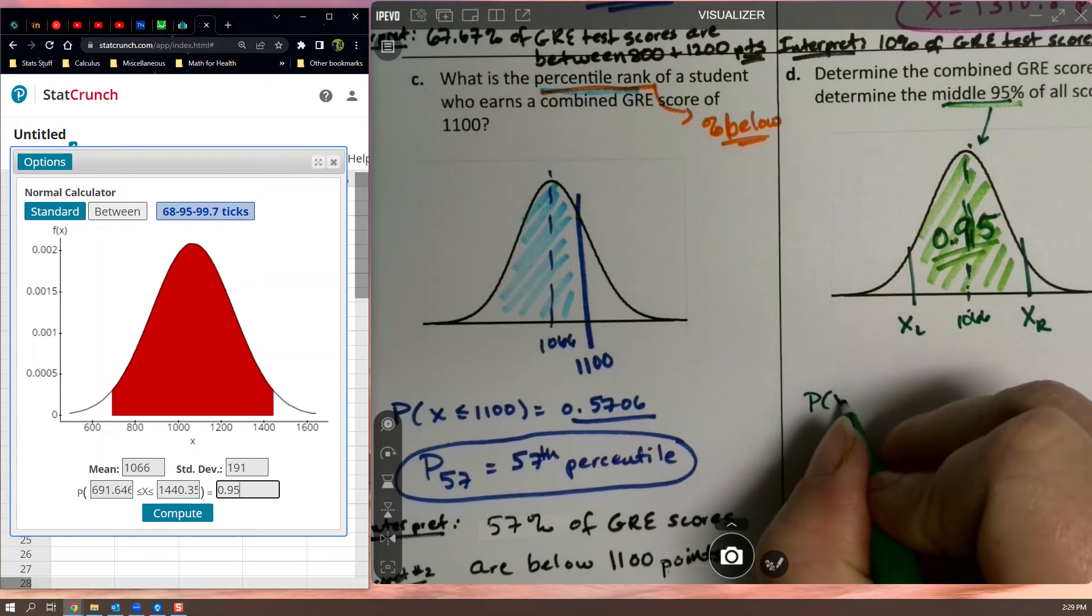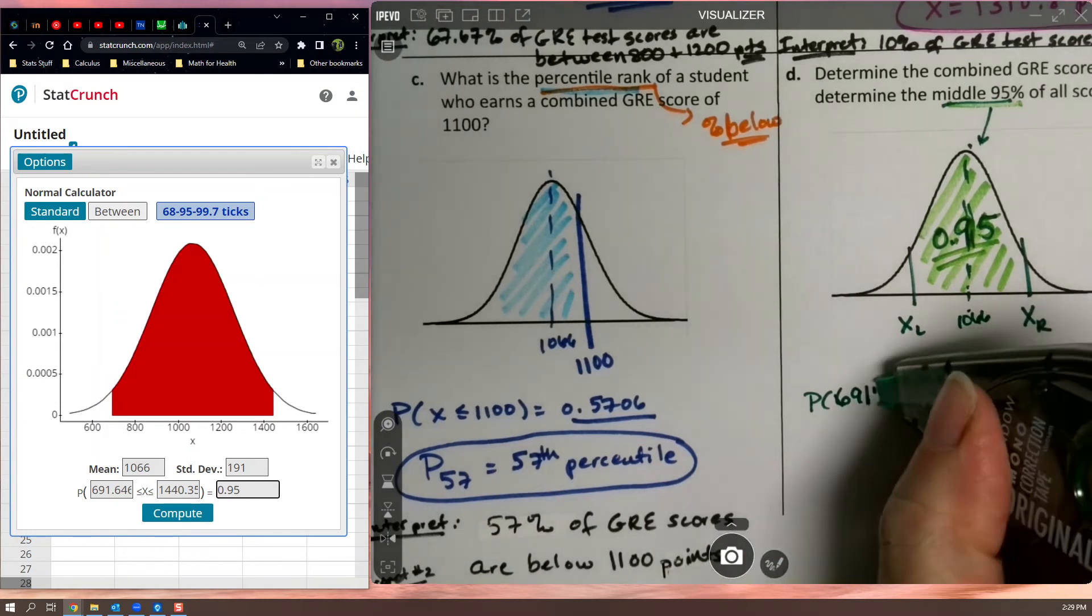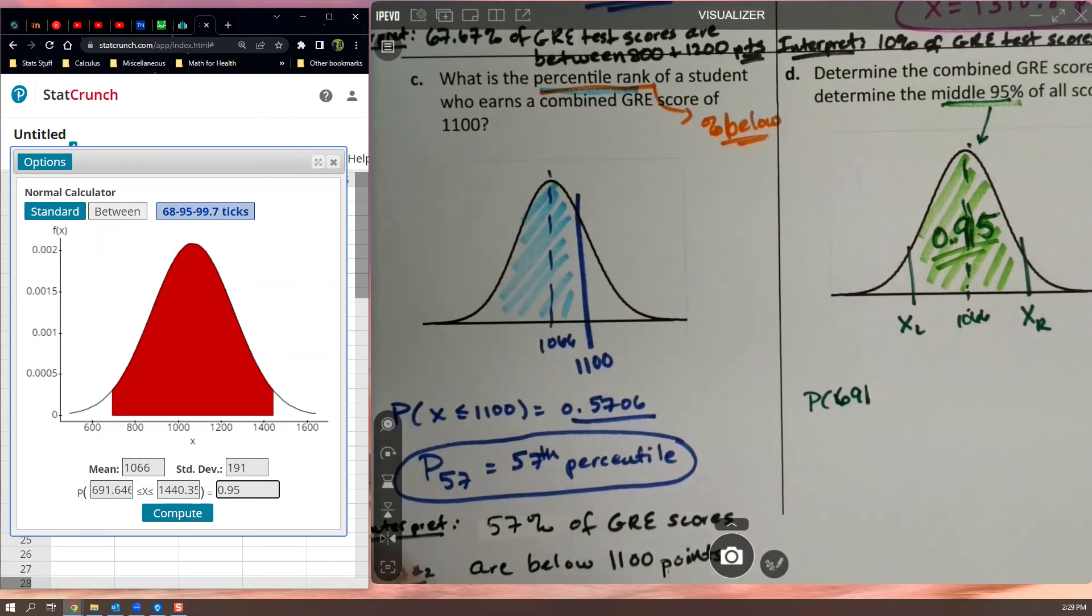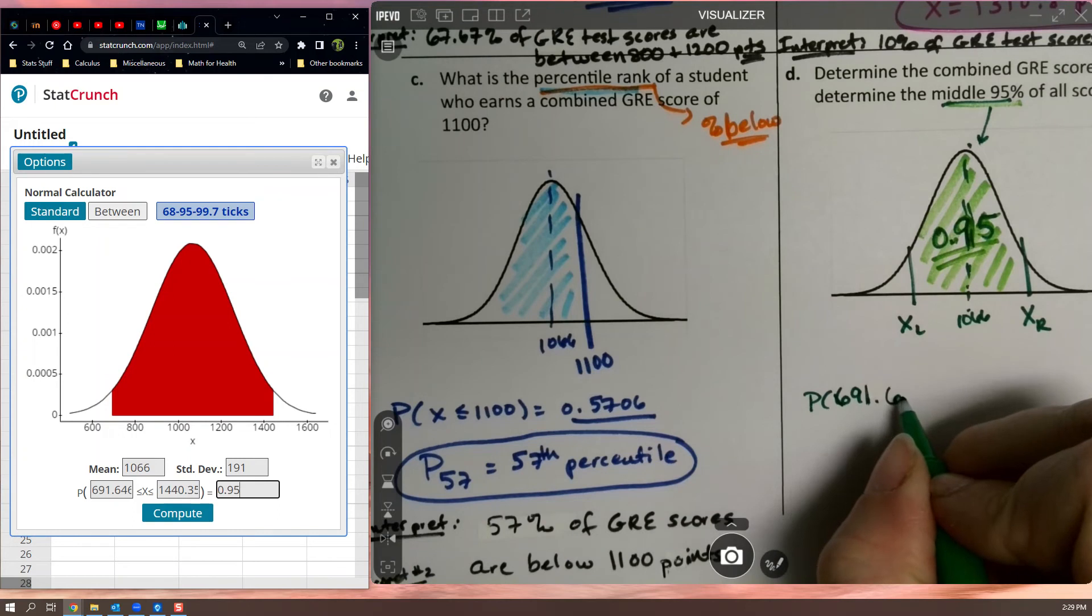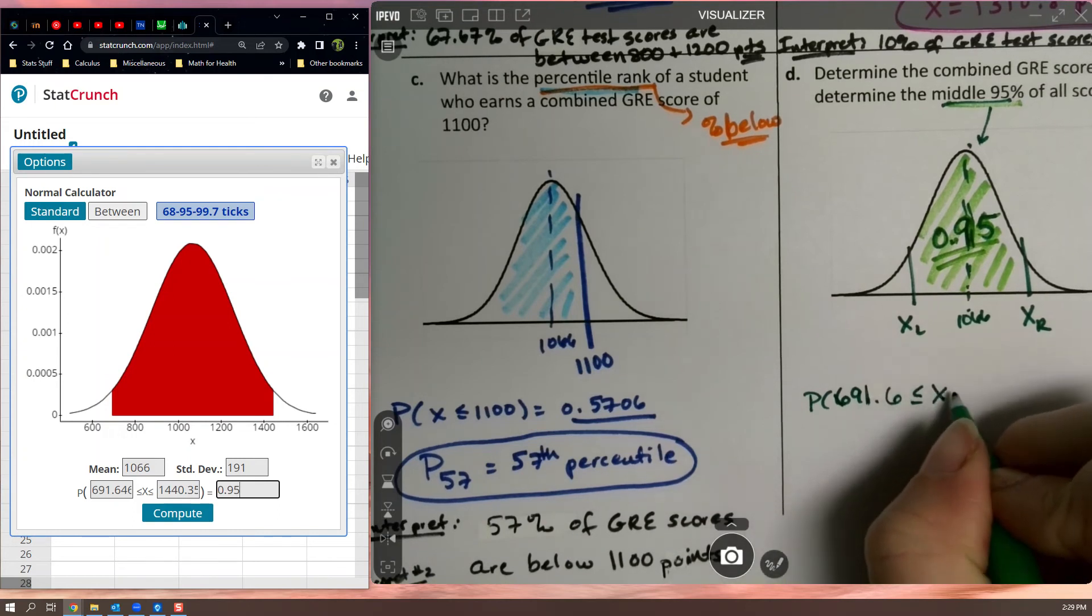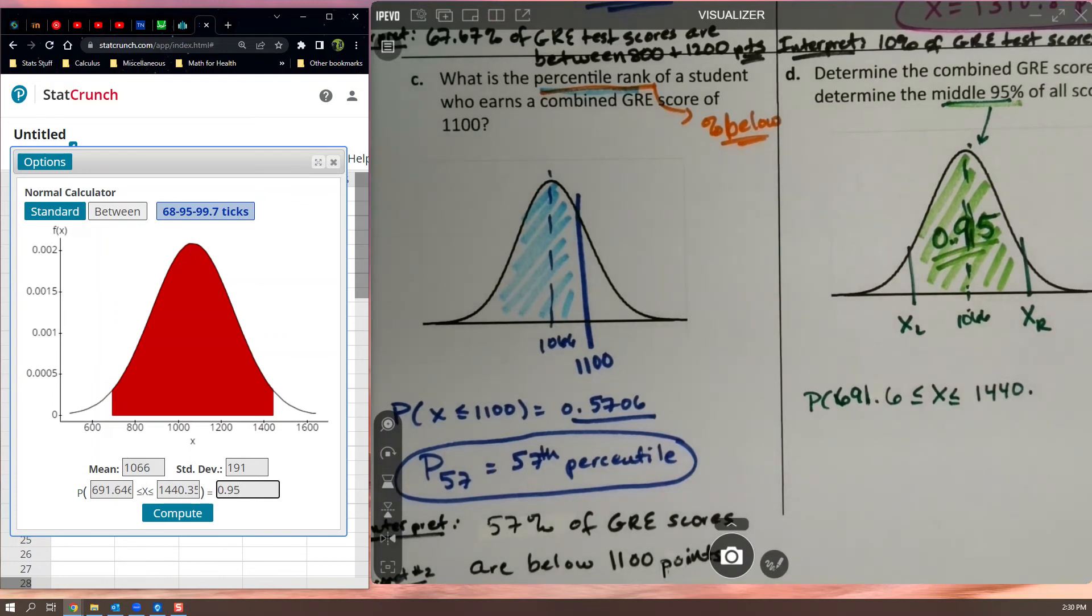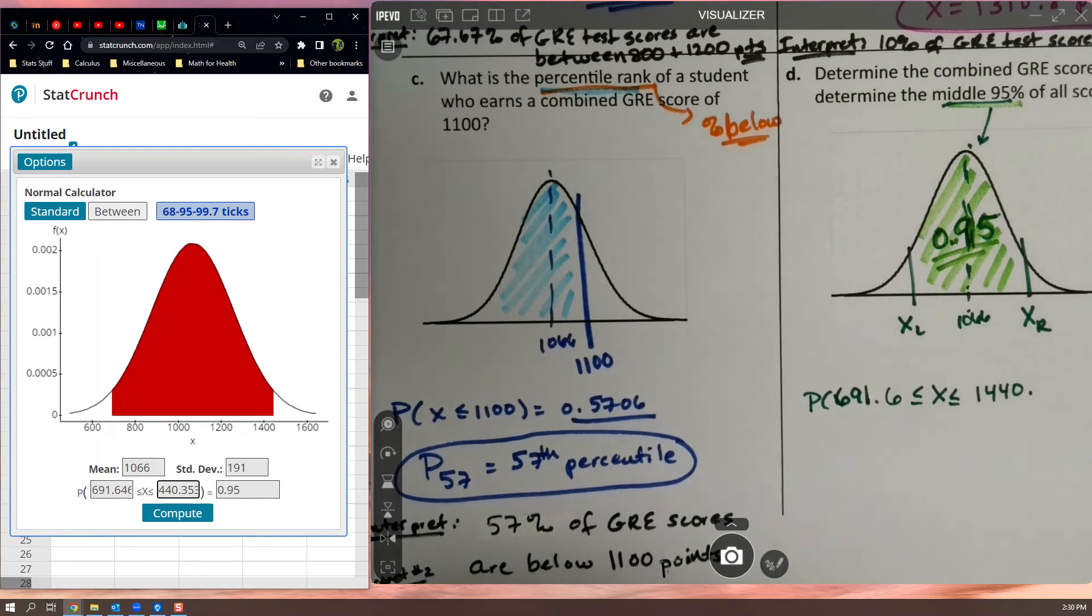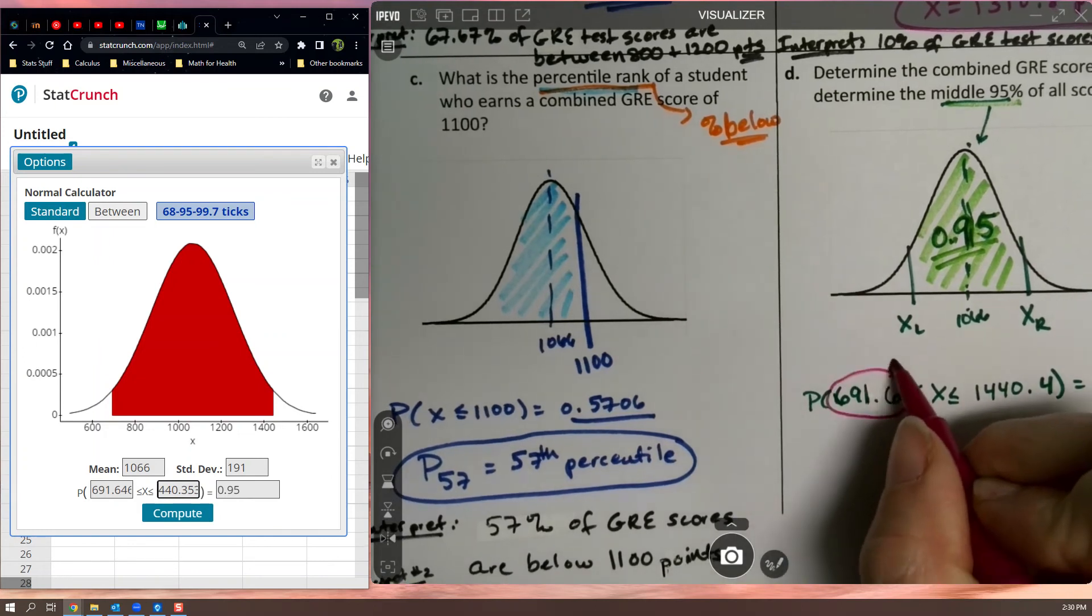So the probability that, let's see. What is this? 691.6. Remember, because it wants one decimal place for scores. Four decimal places for probabilities, one decimal place for scores. So 691.6 is less than or equal to X, which is less than or equal to 1440. That's going to round up. That looks like a 5 after that 3. So I clicked in that box and I kind of moved it over so I could see. So there's a 5 there. So that's going to make it 1440.4 equals 0.95.